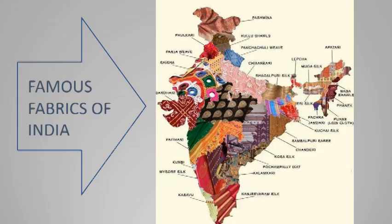There is a map that clearly describes different fabrics — most of them silk fabrics — across southern, western, central, eastern, and northern India. Every state is known for a particular fabric. This tells us how diverse our country is — not just in food, culture, or tradition, but also in fabric. You should know at least two or three silk fabrics that India is famous for and which state they come from.